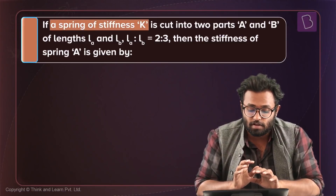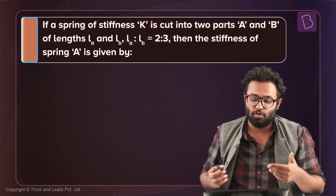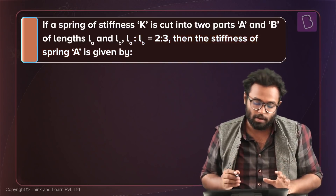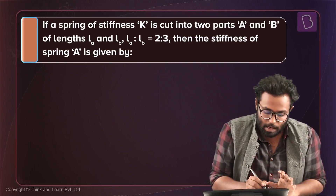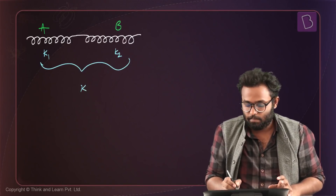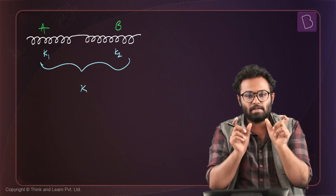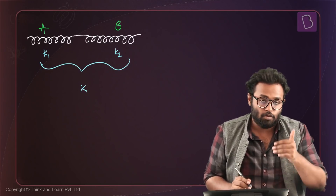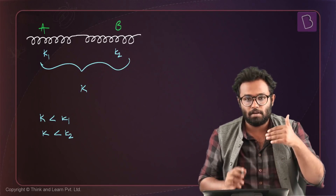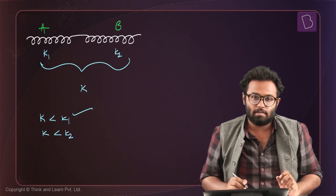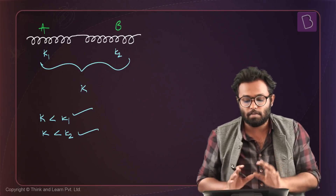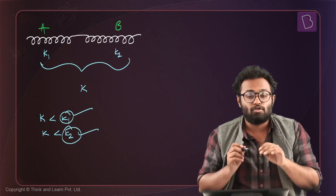A spring of stiffness K is cut into two parts A and B with lengths in ratio 2:3. We need to find the stiffness of spring A. When springs are in series, the resultant spring constant is smaller than any individual spring constant, meaning K₁ > K and K₂ > K. The first two options are less than K, the third equals K, and only the fourth option is greater than K — so option D is the right answer.